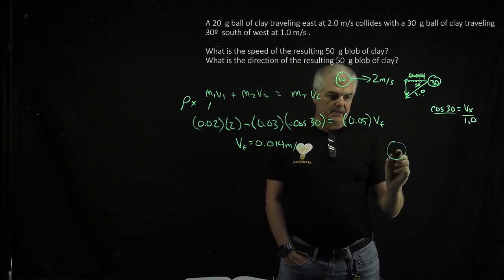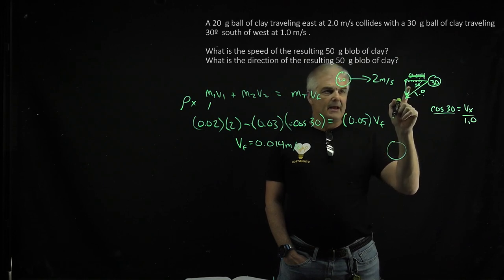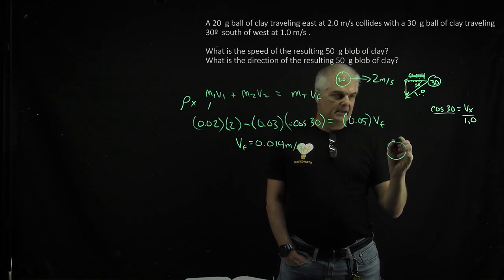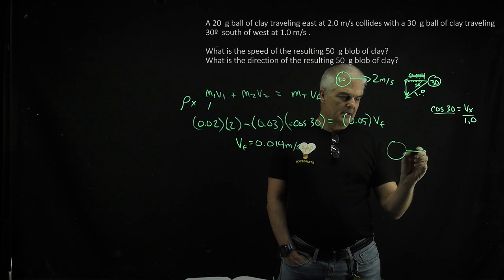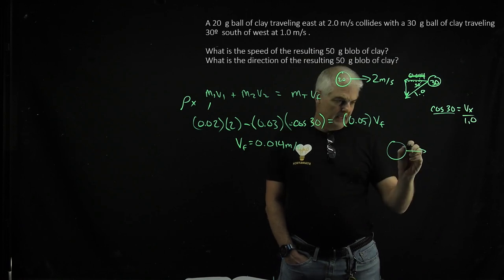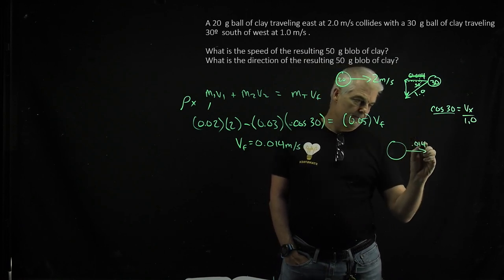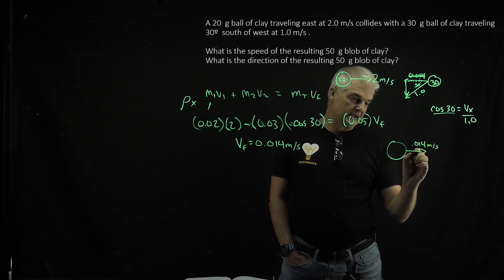This is not the final answer. The V in the x direction is 0.014 meters per second. That's just in the x direction.